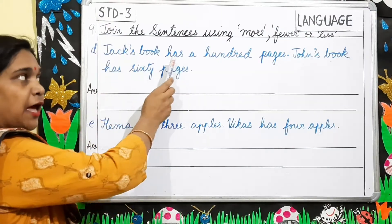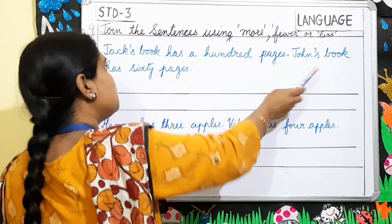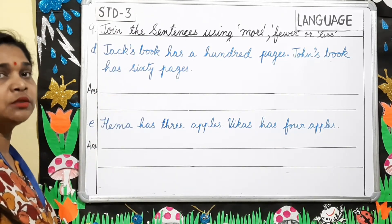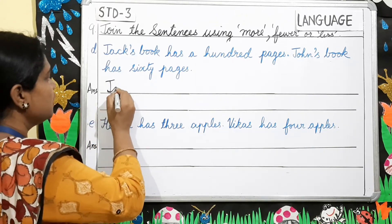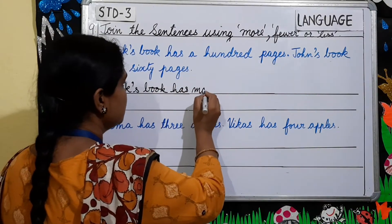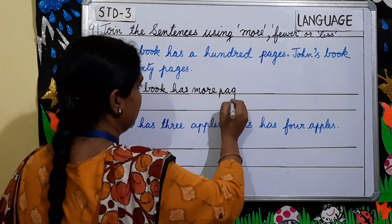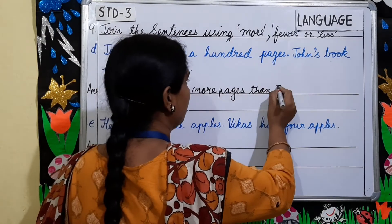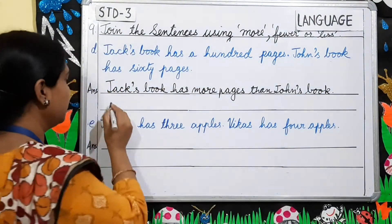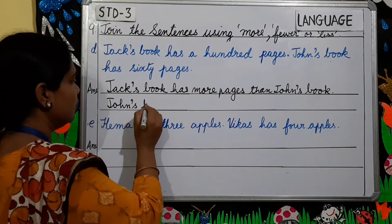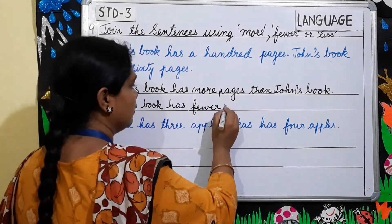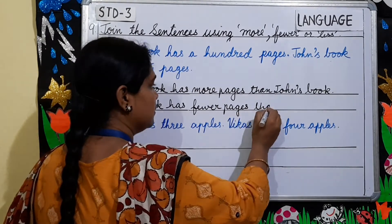Number D: Jack's book has a hundred pages. John's book has 60 pages. Whose book has more pages? It is Jack whose book has got more pages. So you will write: Jack's book has more pages than John's book. And for John you will write: John's book has fewer pages than Jack's book.